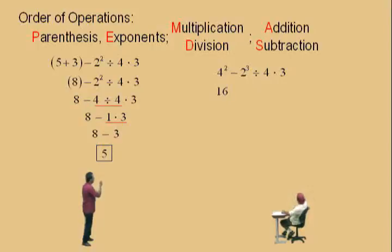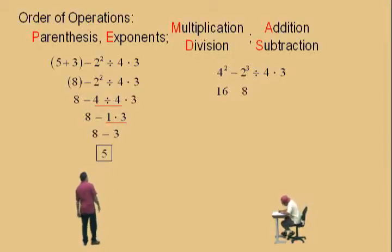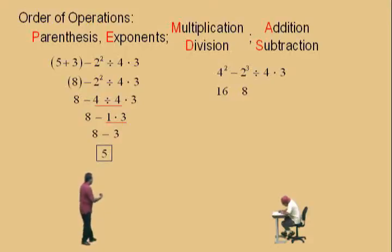Now, we have a 2 cubed. It's not a negative 2 — that's a subtraction symbol. It's 2 cubed. Now, 2 cubed means 2 times 2 times 2, which is what, Charlie? 8. Which is 8, that's right. Bring down our work. We have a subtraction between those two, and bring down our divided by 4 times 3.